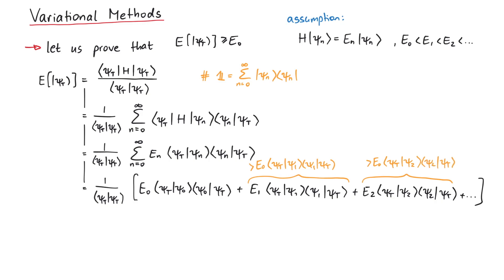In summary, the whole sum must be greater than or equal to the same expression, but with En replaced by E0, such that we can write it outside the summation symbol. Why did we put a greater or equal sign here? In the special case that the test wave function is exactly equal to psi zero, then this is an equality. In all other cases, it's an inequality.